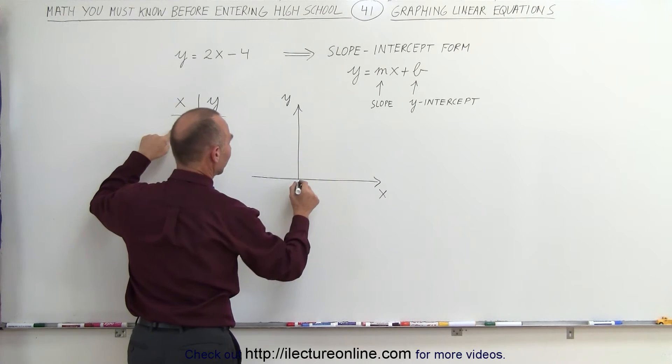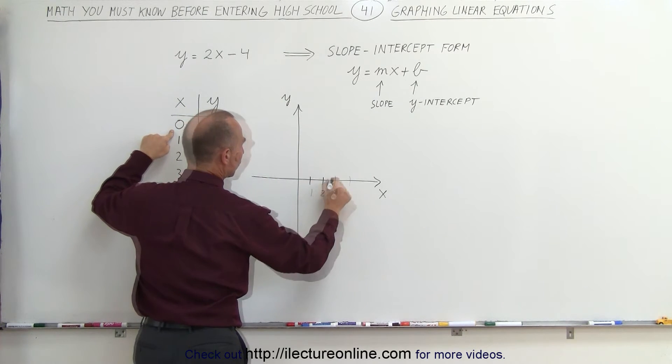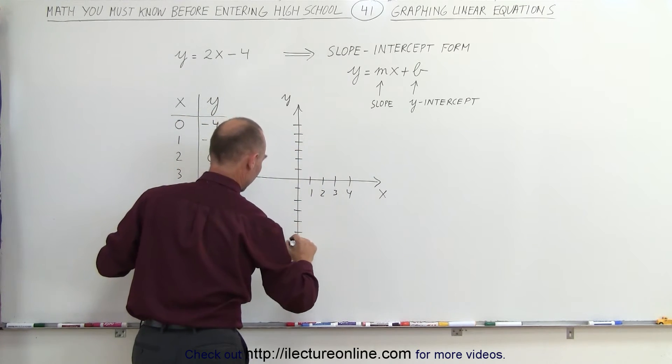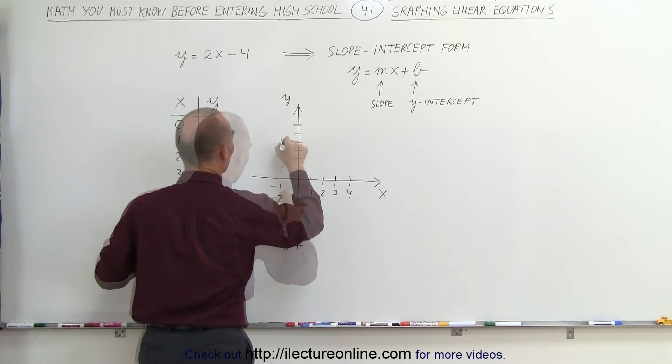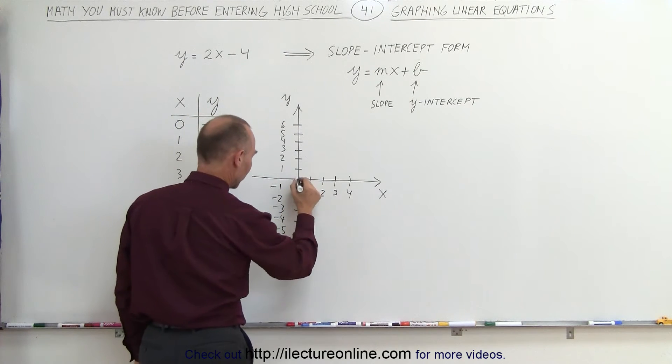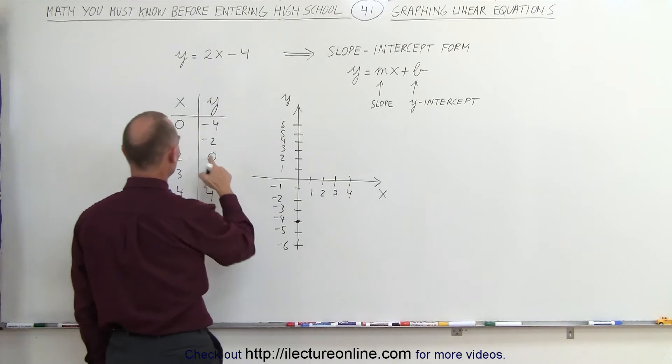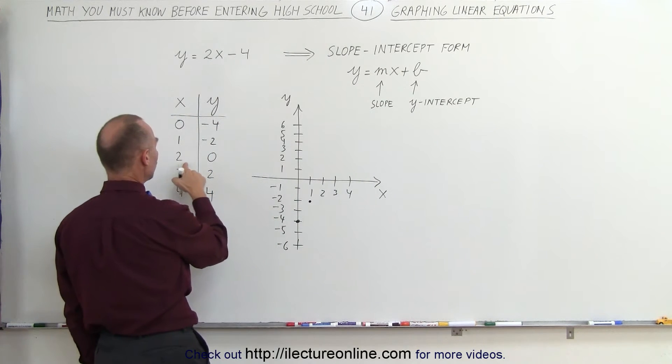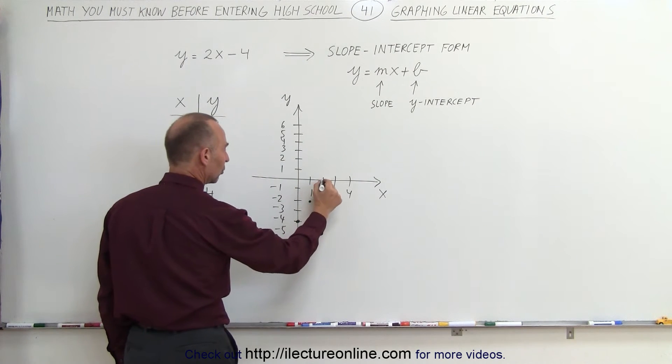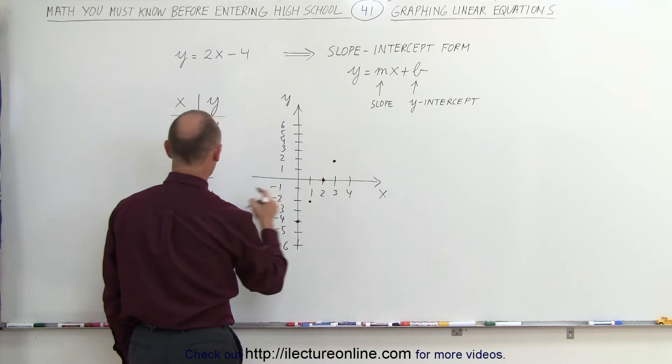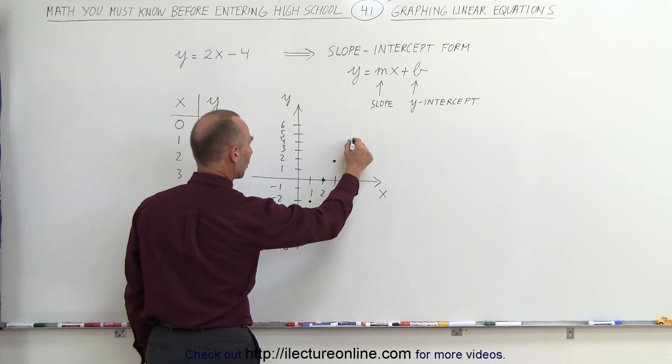When x equals 0, y is negative 4. That's this point right there. When x equals 1, y is negative 2. That would be this point. When x equals 2, y is 0. When x equals 3, y is 2. Right there. And when x equals 4, y is 4. That would be right there.